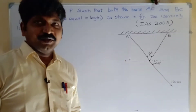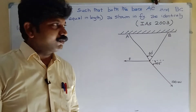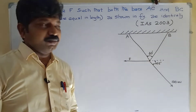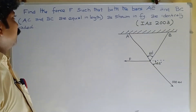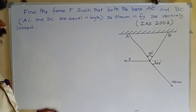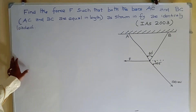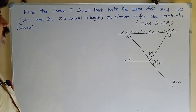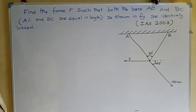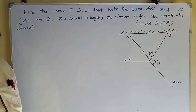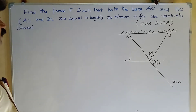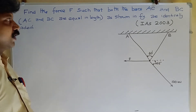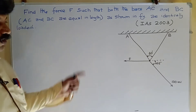Dear students, welcome. We are going to solve one more IAS question from engineering mechanics: find the force F such that both the bars AC and BC in the figure are identically loaded. AC and BC are equal in length, so first our aim is to find the force F.